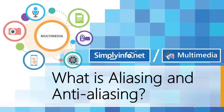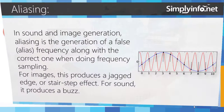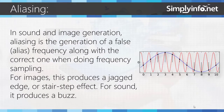What is aliasing and anti-aliasing? In sound and image generation, aliasing is the generation of a false alias frequency along with the correct one when doing frequency sampling. For images, this produces a jagged edge or stair-step effect. For sound, it produces a buzz.